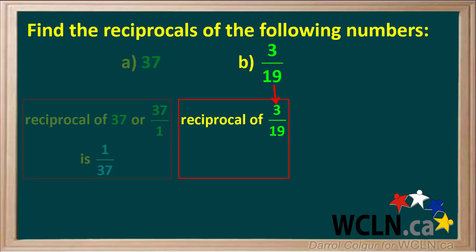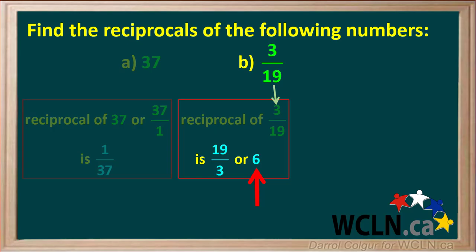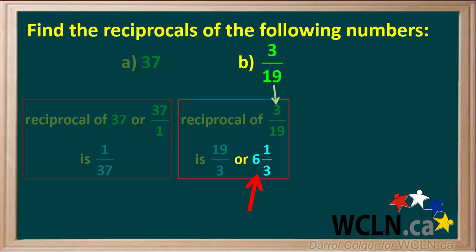Now we'll find the reciprocal of 3/19. Since 3/19 is already a fraction, to find its reciprocal we simply flip it. The answer is 19/3. Because 19/3 is an improper fraction, we can also convert it to a mixed number. 3 goes into 19 six times — 6 times 3 is 18 — so the remainder gives us one-third, and the mixed number is 6 and 1/3. So the reciprocal of 3/19 is 19/3, or 6 and 1/3.